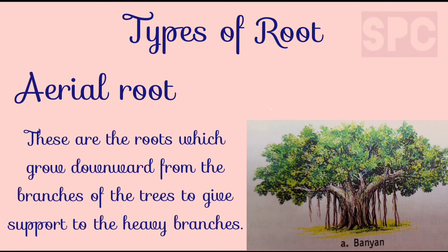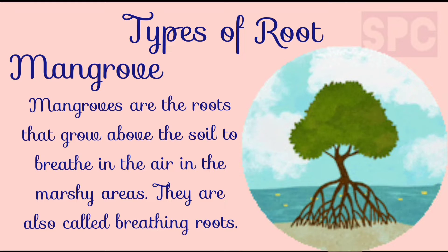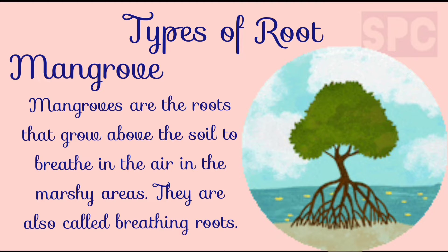You must have seen some long, rope-like roots hanging from the branches of banyan trees. These are called aerial roots. They grow downwards to give support to the heavy branches of the trees. Mangroves are a special kind of roots that grow above the soil to breathe in the air in the marshy areas, and so they are called breathing roots.